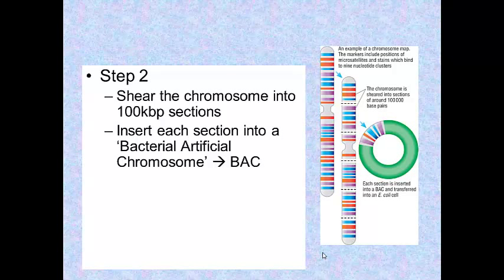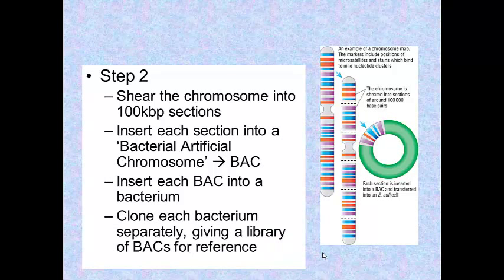What you can then do is insert each section into a BAC, a Bacterial Artificial Chromosome. From the gross features such as these microsatellites, you should know which part of the chromosome is in each BAC. That means you can label each BAC according to which part of which chromosome it contains, giving you a very specific record. You then reinsert those BACs into a bacterium, one BAC per bacterium, and clone each bacterium separately. This gives you a living library of BACs for future reference.